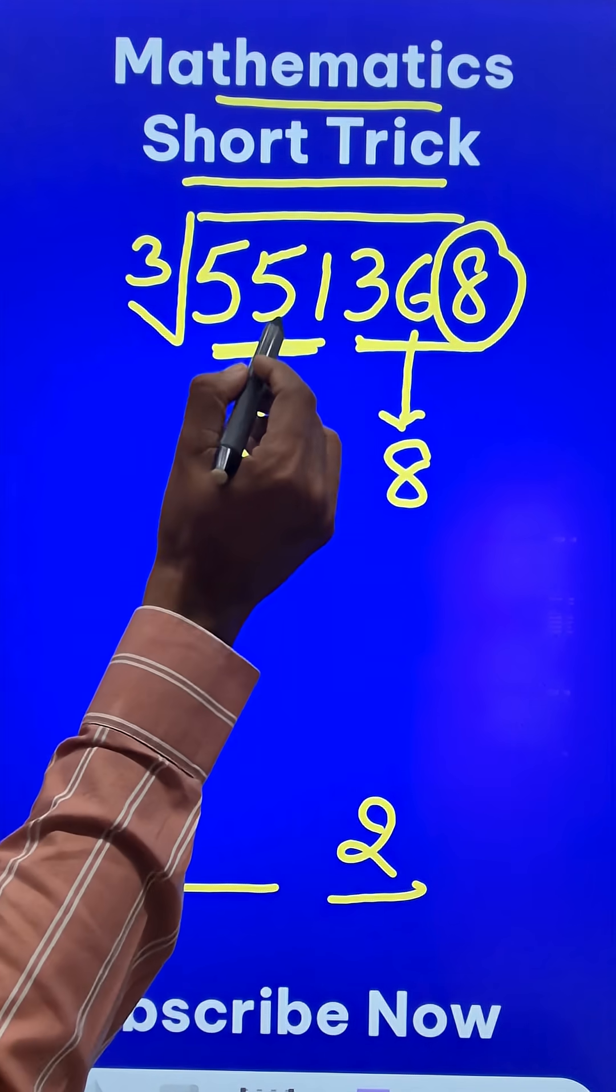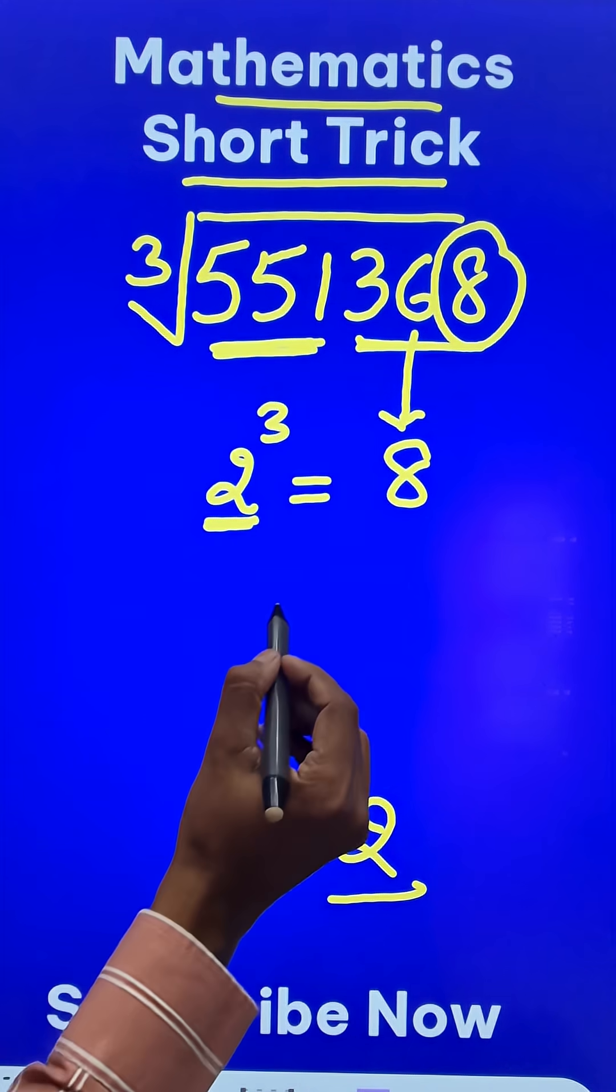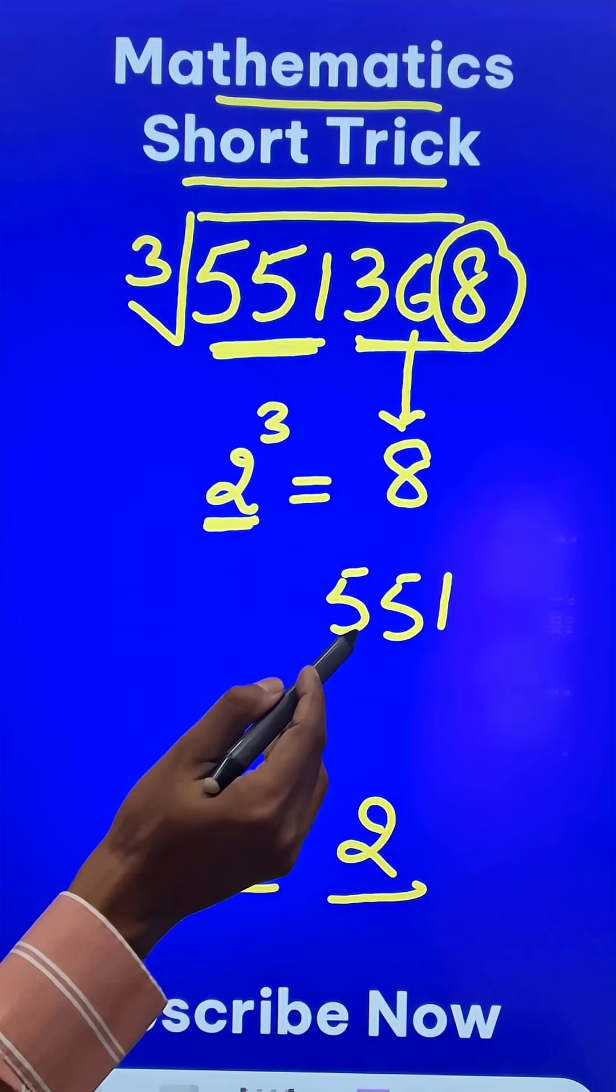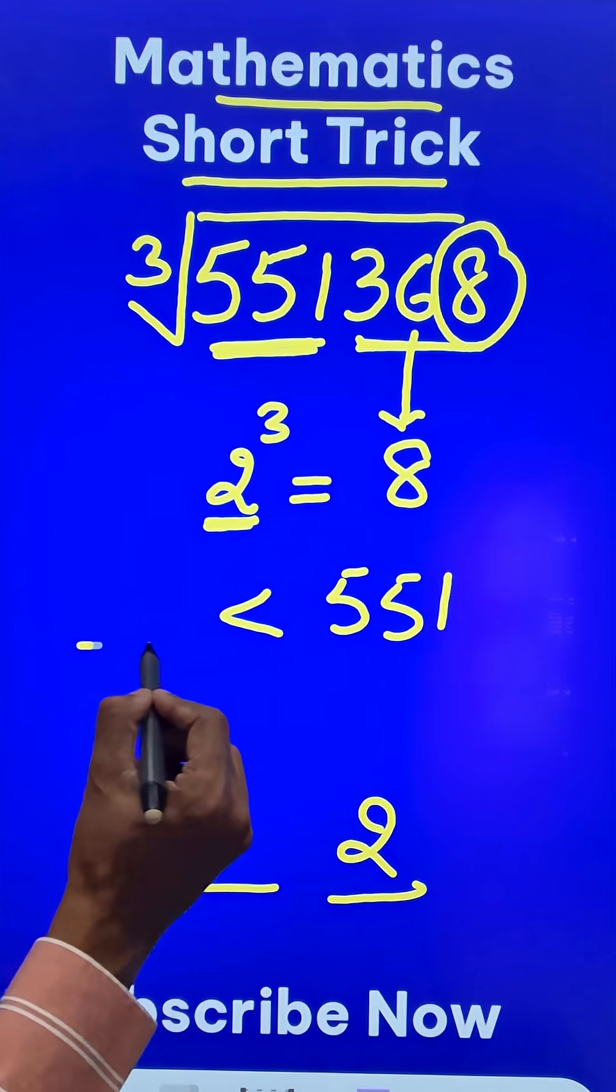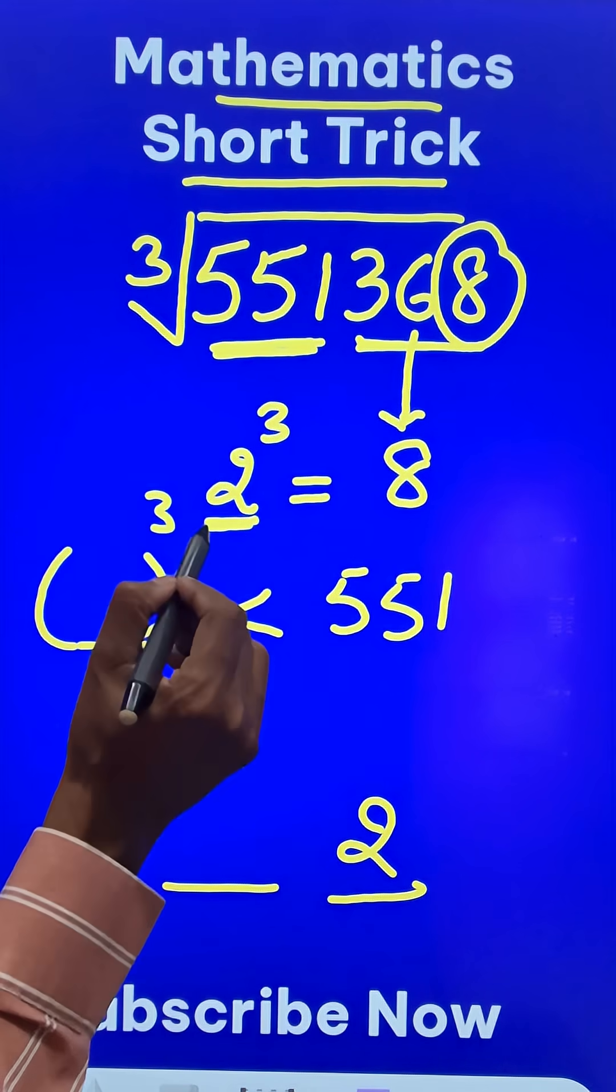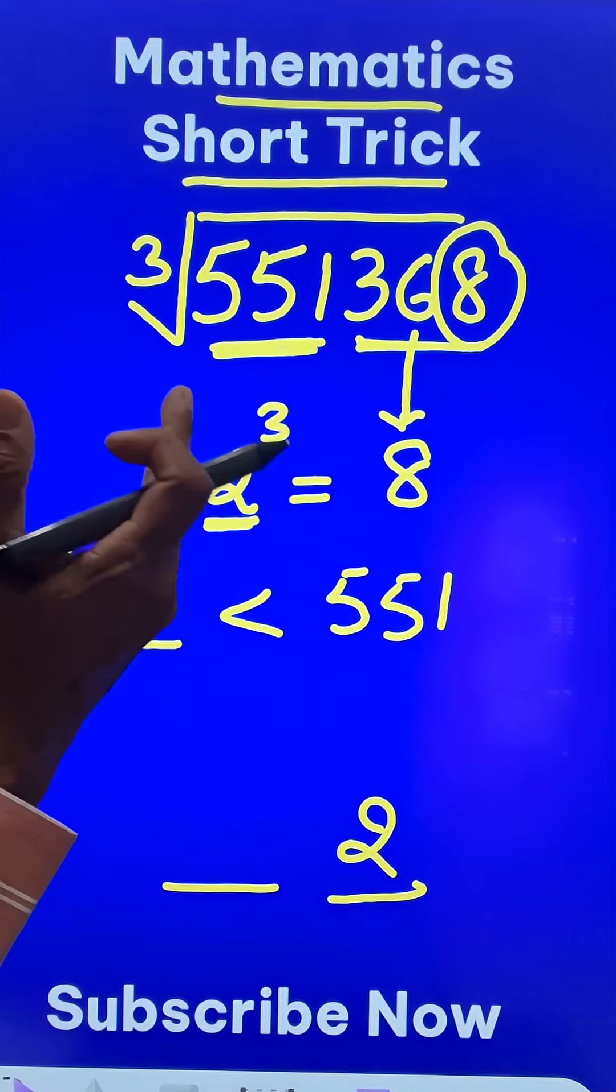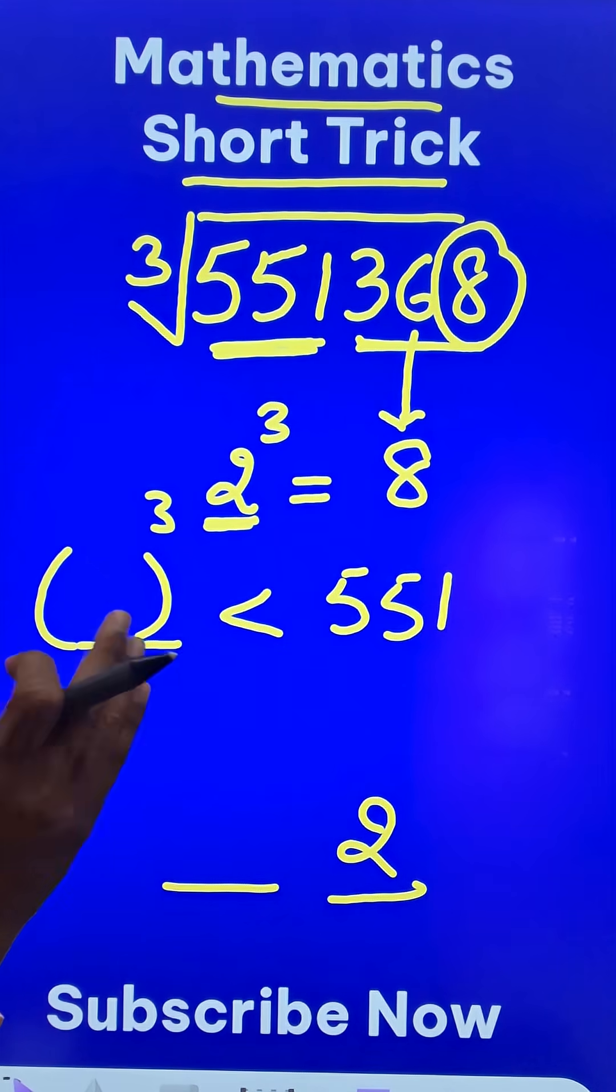Now what about the tenth place? That we will obtain from this triple, that is 551. For this you need to know a number whose cube is slightly less than 551, nearest to 551. So which is that perfect cube number whose cube is nearest to 551? It is 8.